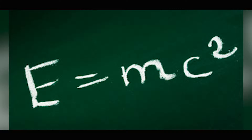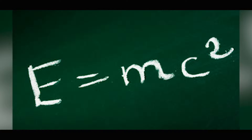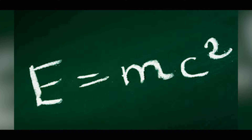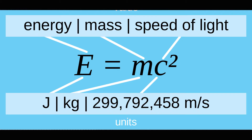Today we're going to be explaining the theory of relativity. You've probably heard of it — it's basically a symbol of intellectualism the world over. E equals MC squared. But what does it mean? Well, E stands for energy, M stands for mass, and C is the speed of light. So energy equals mass times the speed of light squared.